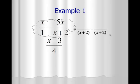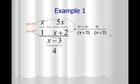On the first fraction we multiply by x plus 2, and when we distribute to the top we get x squared plus 2x. The second fraction already has the common denominator, so it stays 5x. We keep the common denominator and combine like terms on top: 2x subtract 5x is negative 3x. So the answer to the cloud portion is x squared minus 3x over x plus 2.